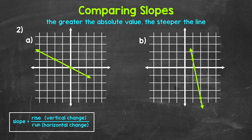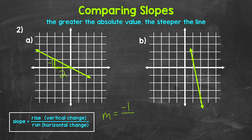Let's start with line A, beginning with the rise. We need to go down one unit to align with the other point, so the rise is negative one. For the run, we go over two units to the right, so the run is positive two. The slope for line A is the rise of negative one over the run of two — negative one over two, or negative one half.